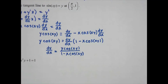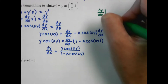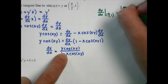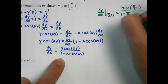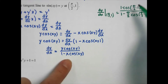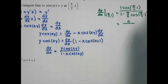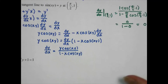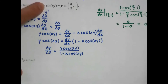Now we want to find the derivative at a specific point, so we plug pi over 2 in for x and 1 for y. Cosine of pi over 2 times 1 at the top gives 0. So numerator is 0, and the denominator is 1 minus 0, giving us a slope of 0 at that location. You could use Desmos to graph this and find that at this location there's a slope of 0.